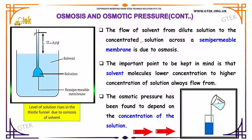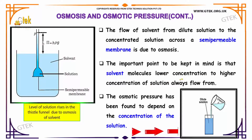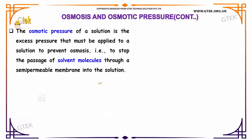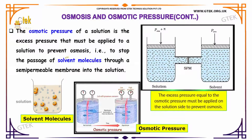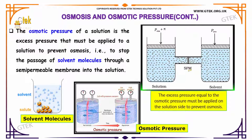The flow of the solvent from a dilute solution to a concentrated solution across a semi-permeable membrane is called osmosis. The important point to keep in mind is that solvent molecules always flow from lower concentration to higher concentration of solution. The osmotic pressure of the solution is the excess pressure that must be applied to the solution to prevent osmosis — to stop the passage of solvent molecules through a semi-permeable membrane into the solution. This is referred to as osmotic pressure.